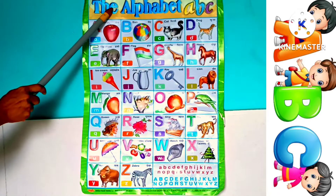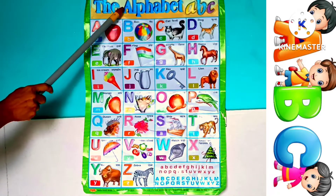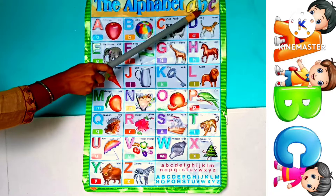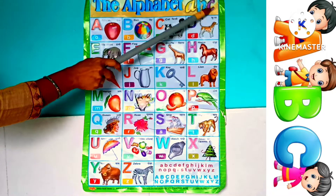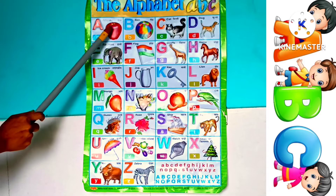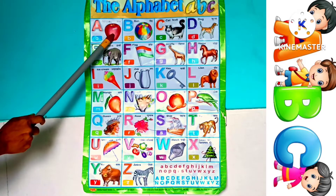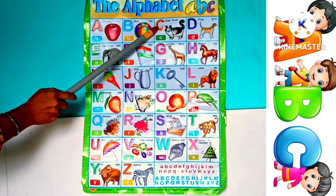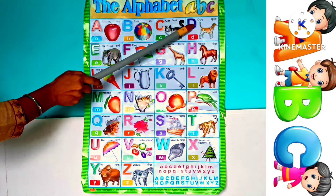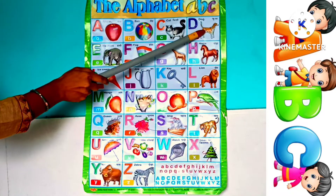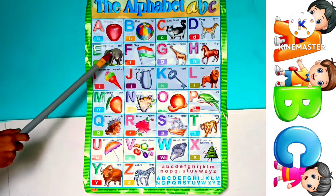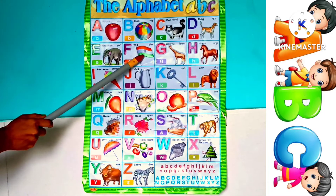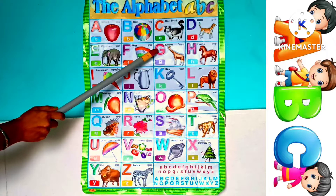The Alphabet. A for Apple, B for Ball, C for Cat, D for Dog, E for Elephant, F for Flag, G for Giraffe.